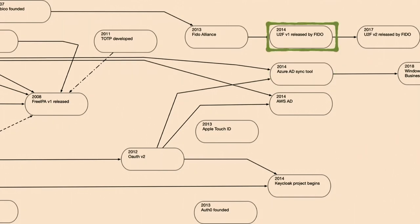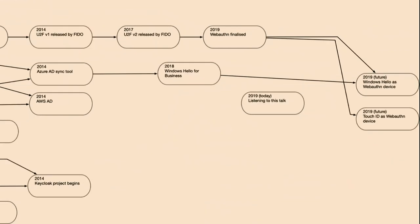2014 is also when U2F version 1 was released — probably the first web-based token which does cryptographic auth. In 2017, U2F version 2 was updated and released by FIDO. This uses elliptic curve keys and, based on your domain name and a challenge provided, derives the key you need to use and signs the challenge. This is real cryptographic auth — much easier to use than something like X.509. All you have to do is plug this key in, register to say here is my public key, and that is it. No dealing with certs, no lifetime, no nothing. It really works very well.